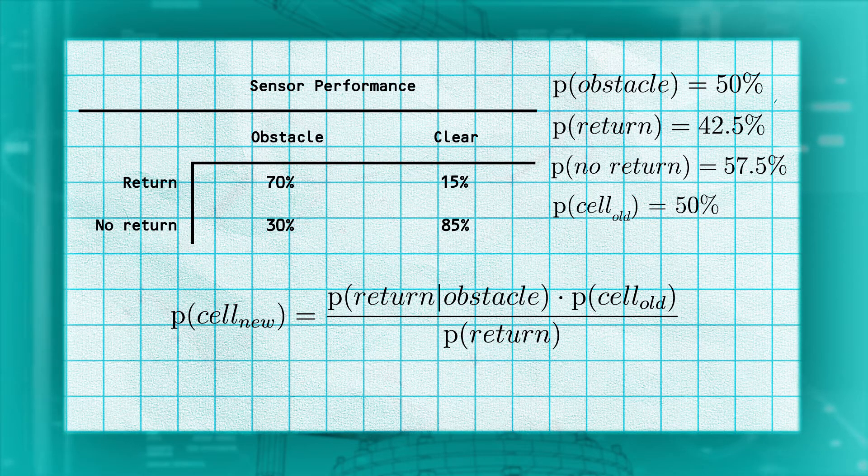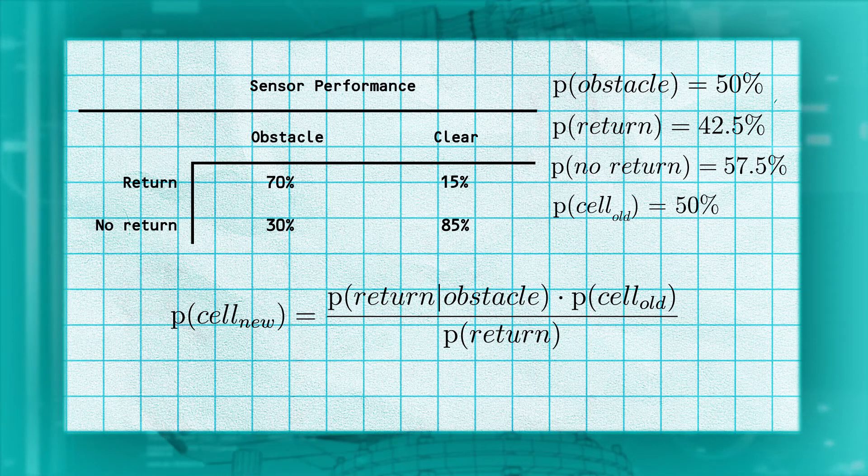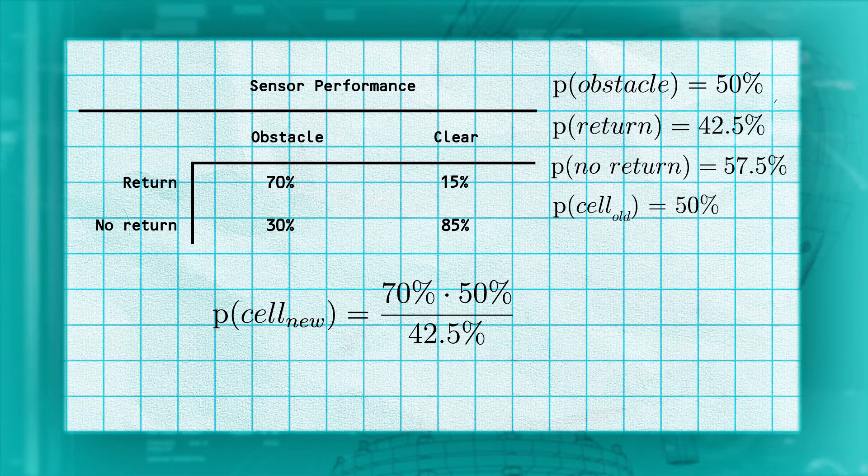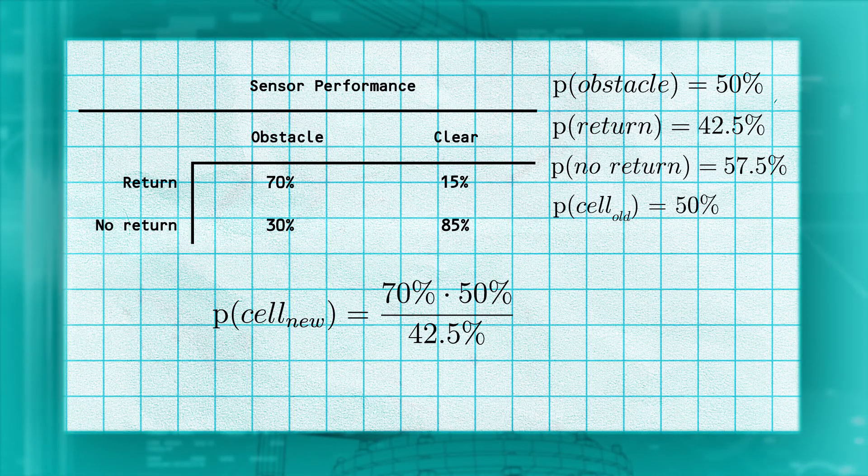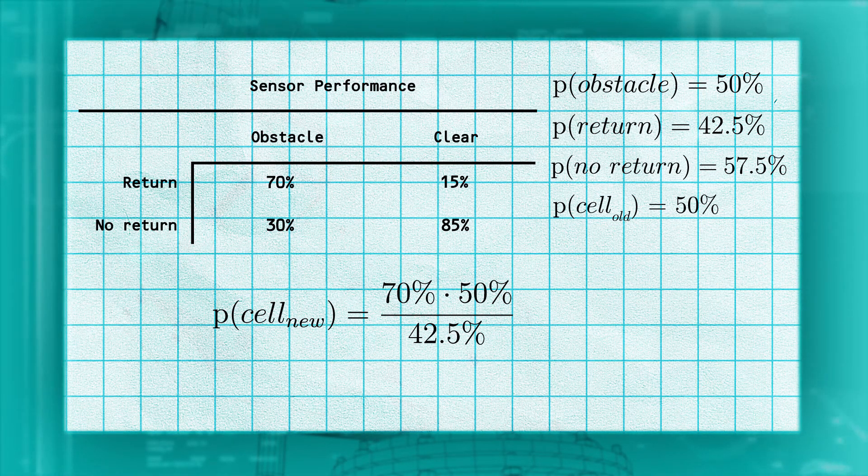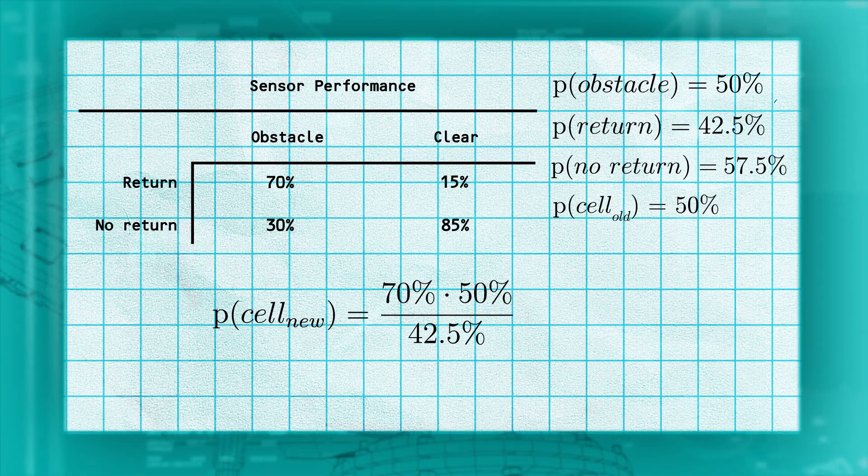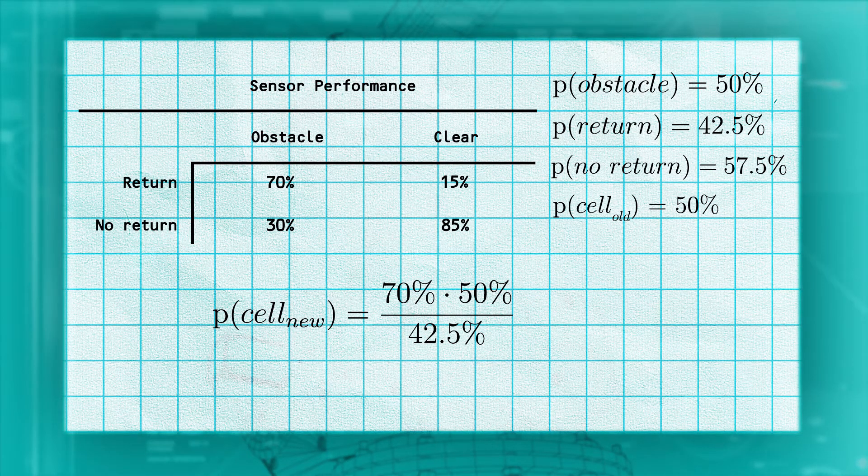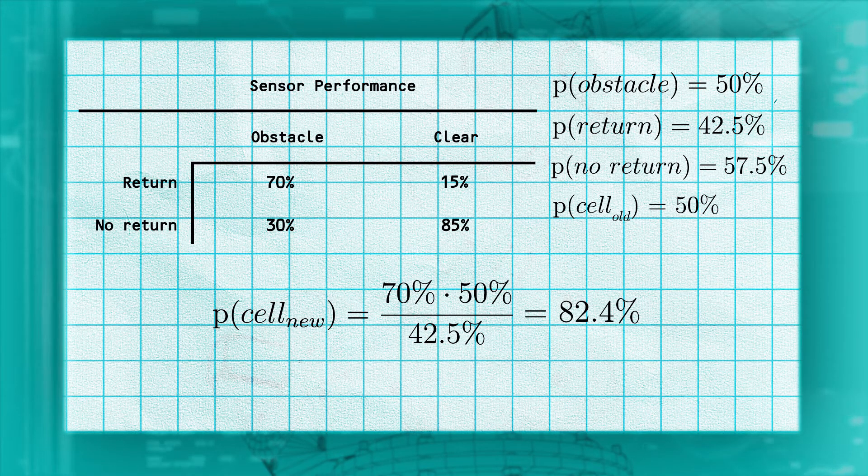Let's calculate our new cell value. Since we had a return, we multiply our current cell by the probability of getting a return given an obstacle, which was 70%, and divide by the probability of getting a return, which was 42.5%. In this case, we end up with a new cell value of 82.4%.